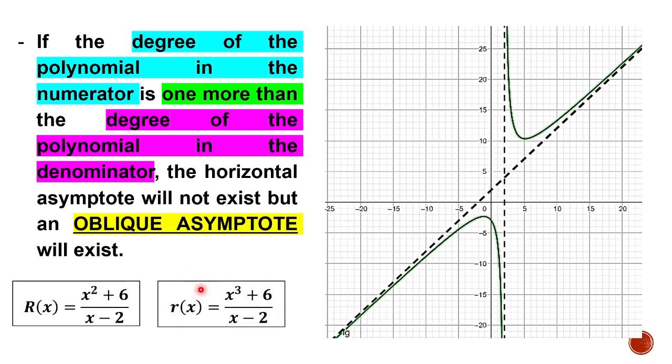To get the oblique asymptote, we are going to divide the rational function. If we divide this function, the result will be a linear equation. Take note that a linear equation has a graph of a straight line.